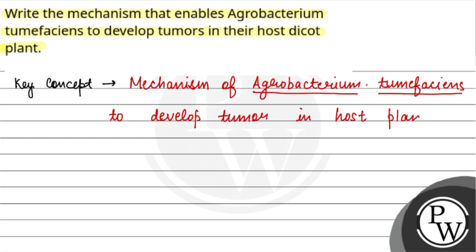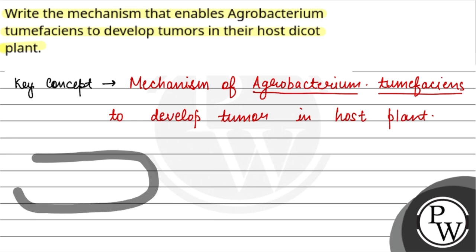Let us understand what is Agrobacterium tumefaciens. It is a type of bacteria, or we can say pathogen, which affects many dicot plants and causes different types of disease, like crown gall disease. These are some diseases caused by Agrobacterium tumefaciens.